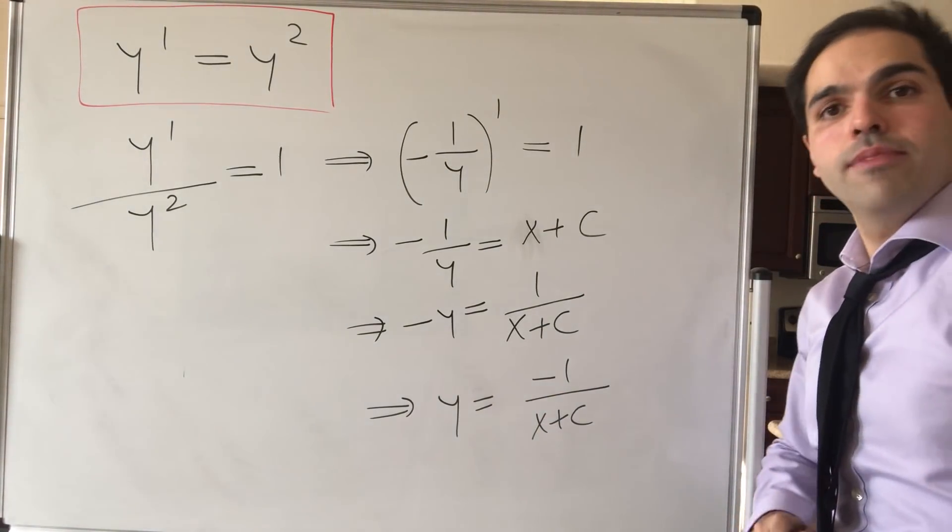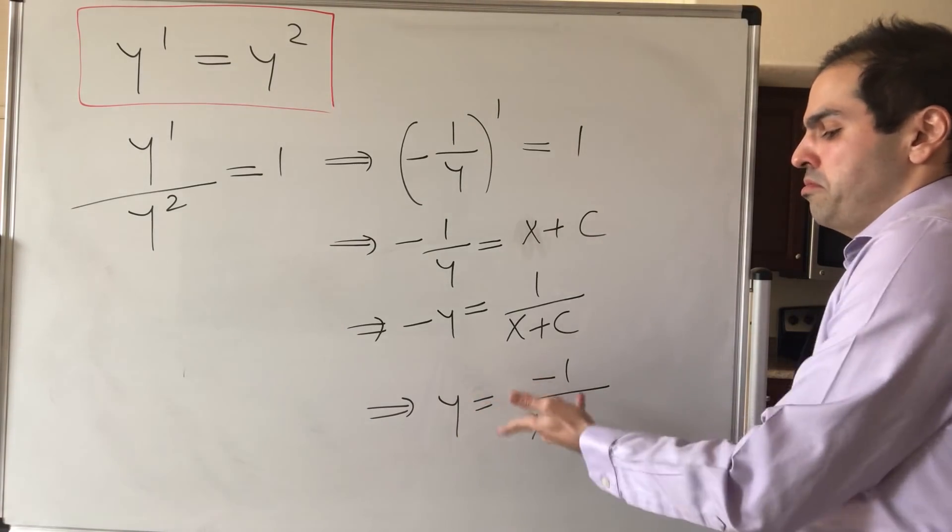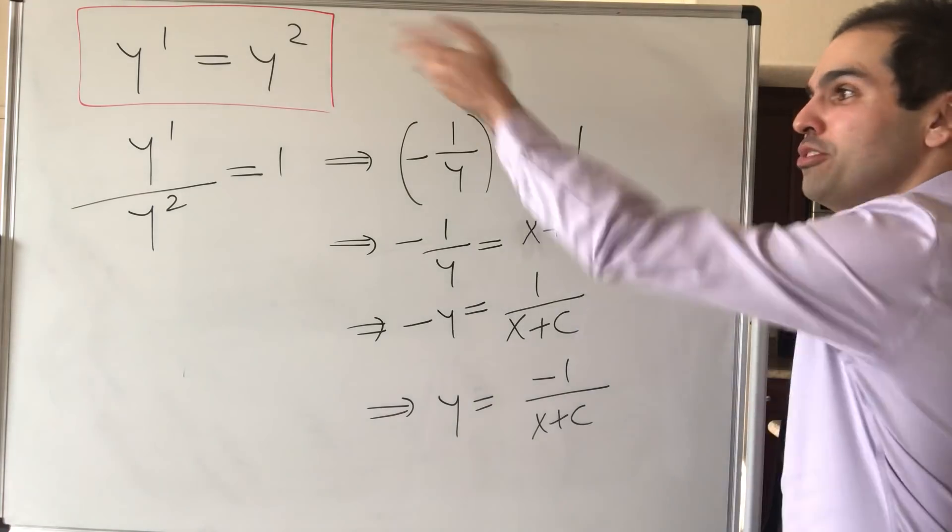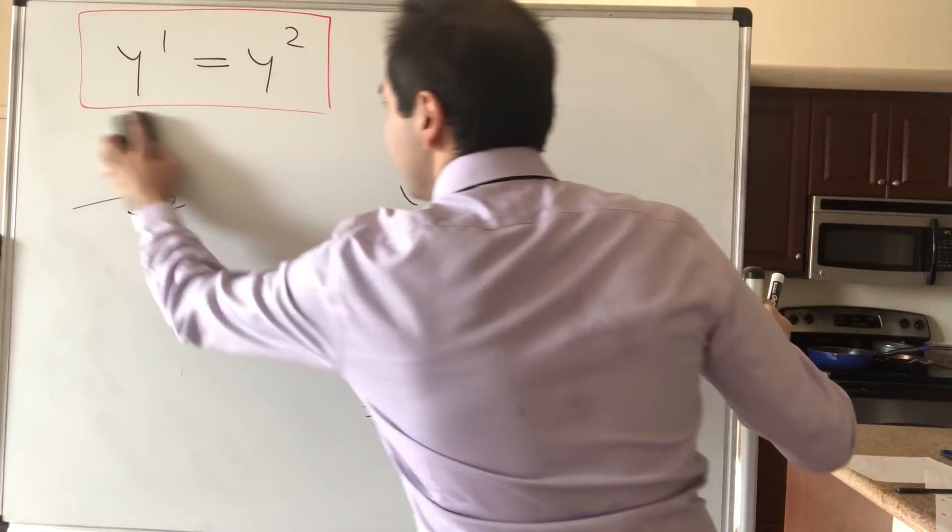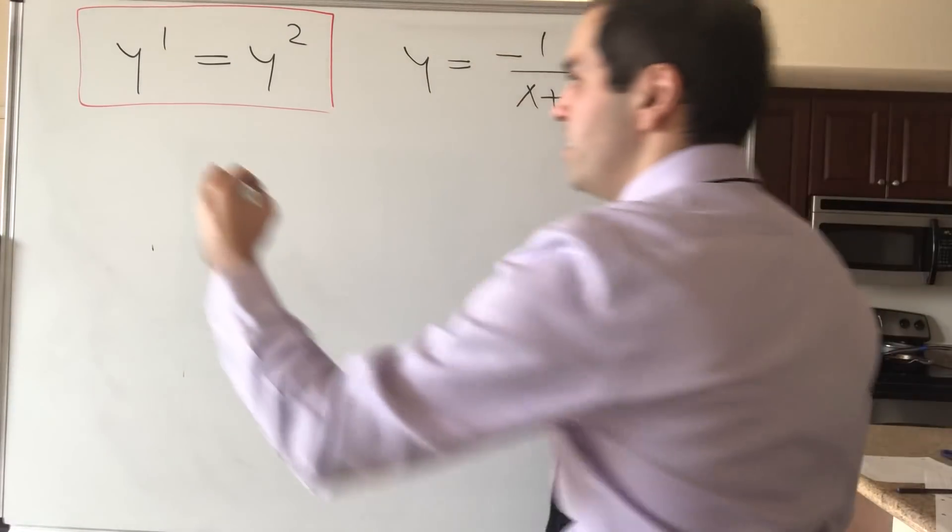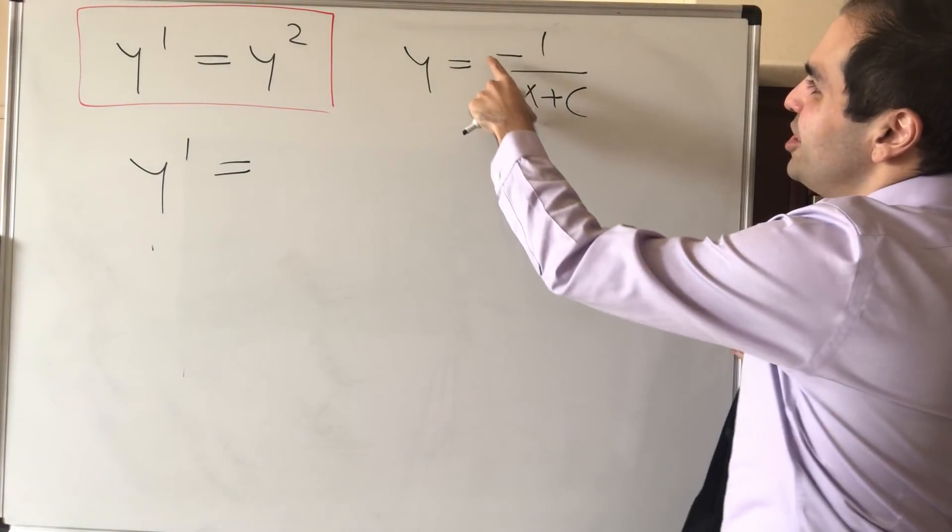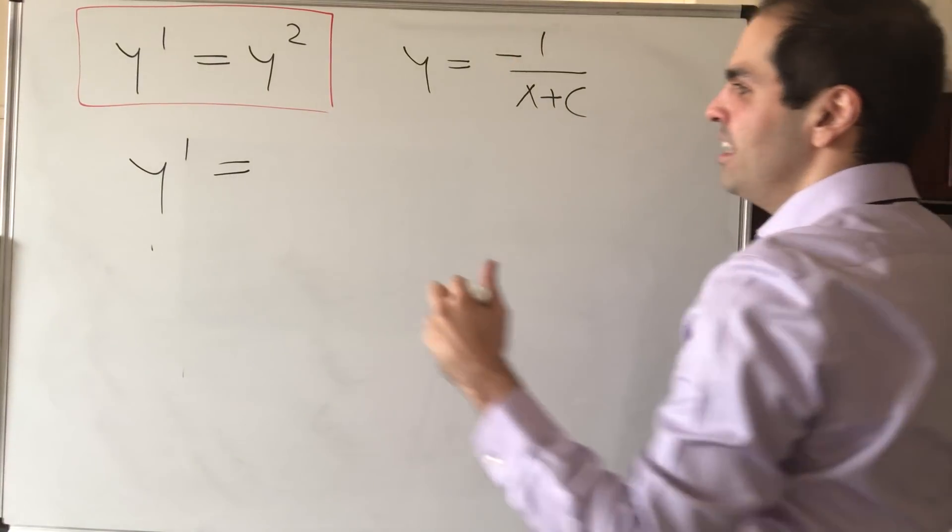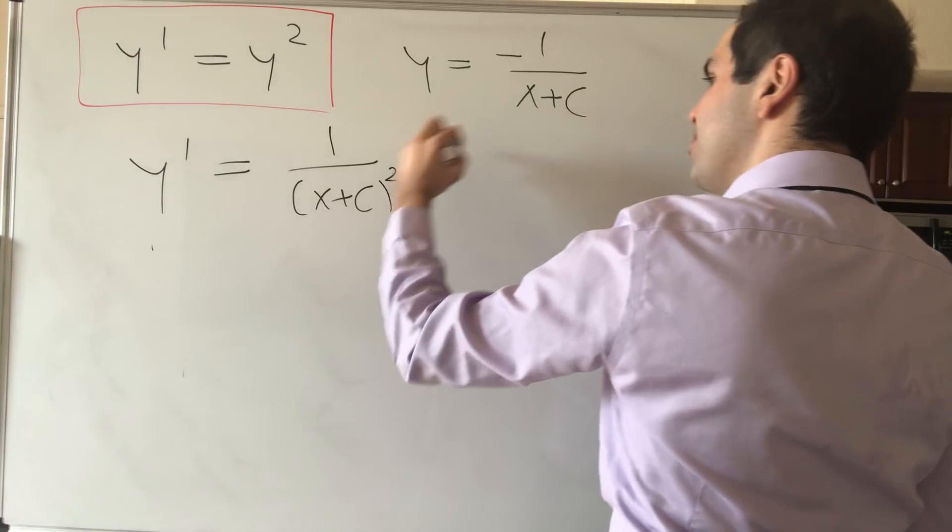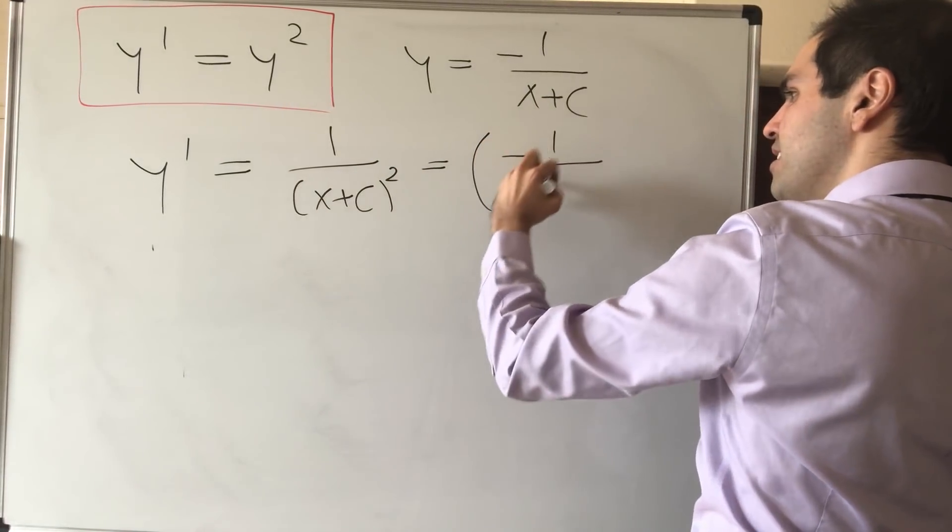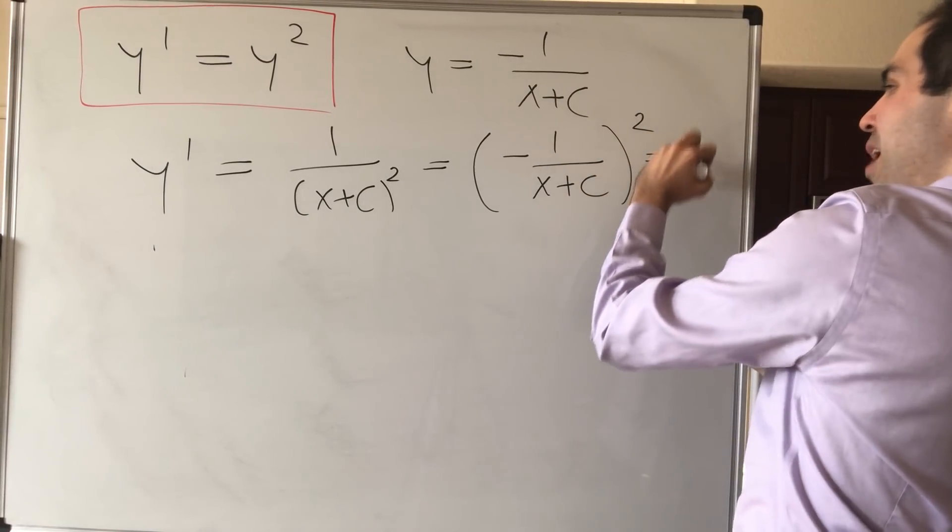And the first time I saw this, I was not convinced again, because what does this reciprocal have to do with squares? But let me show you that indeed it does make sense. Well, let's differentiate this. So if you differentiate this and use the chain rule here, you get minus minus, so plus 1 over x plus c squared. And notice it is indeed the square of this. So y prime is y squared.